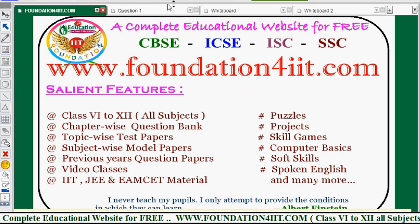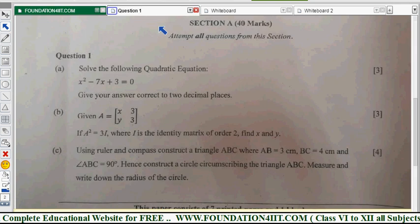Let us solve these problems one by one. In this paper, the quadratic equation x squared minus 7x plus 3 equals 0. Give your answer correct to two decimal places. To solve this, you can apply the formula because factoring is not possible.